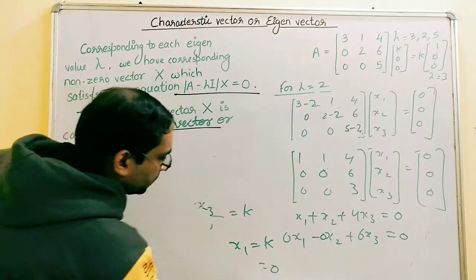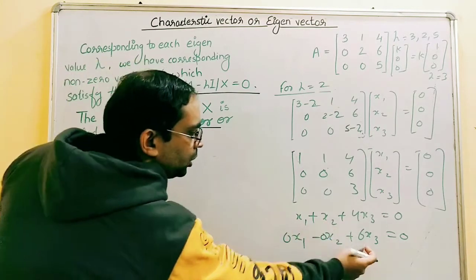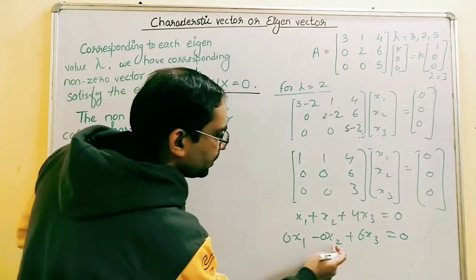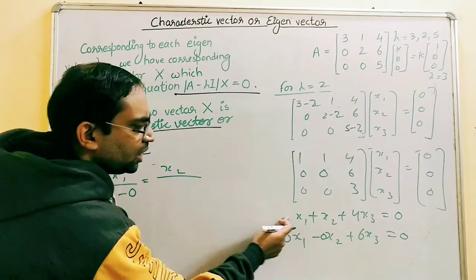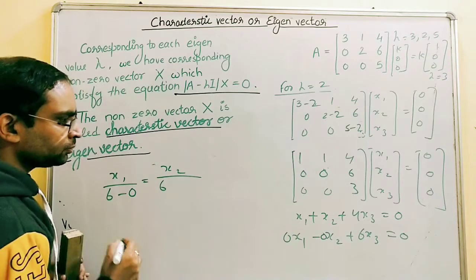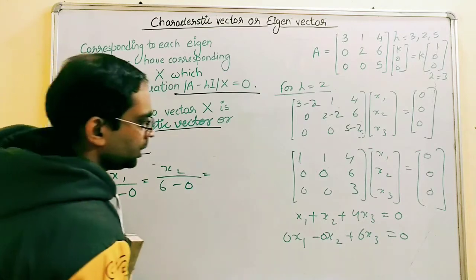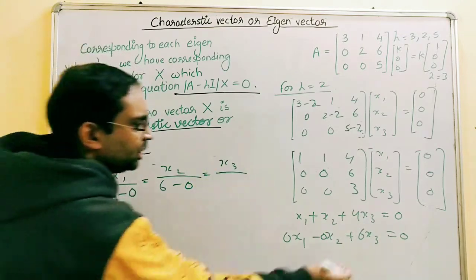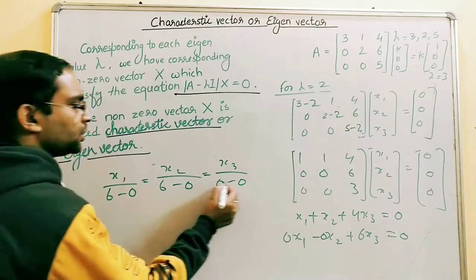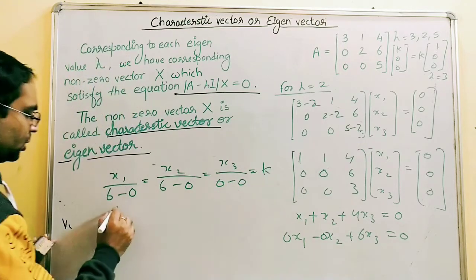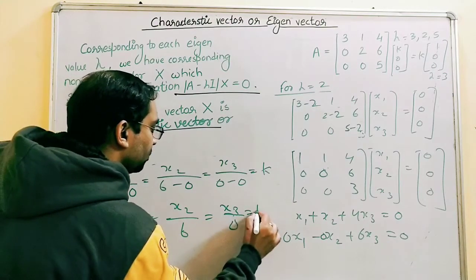Applying the cross-product method for lambda equals 2: X1 / (1×6 - 0×4) = X2 / (1×6 - 0×4) = X3 / (1×0 - 0×1). This gives X1/6 = X2/6 = X3/0 = K.